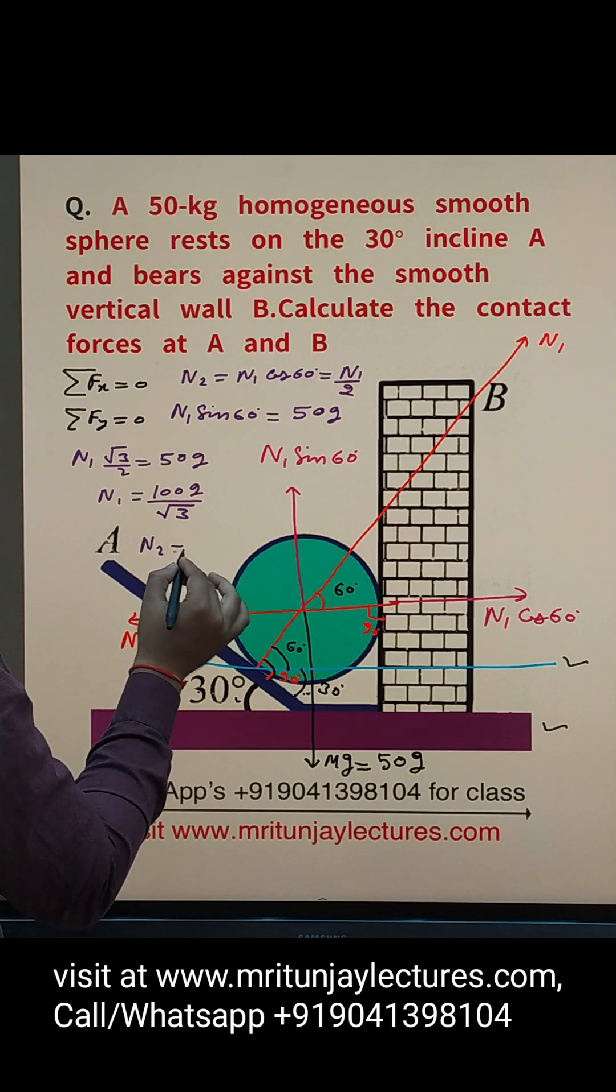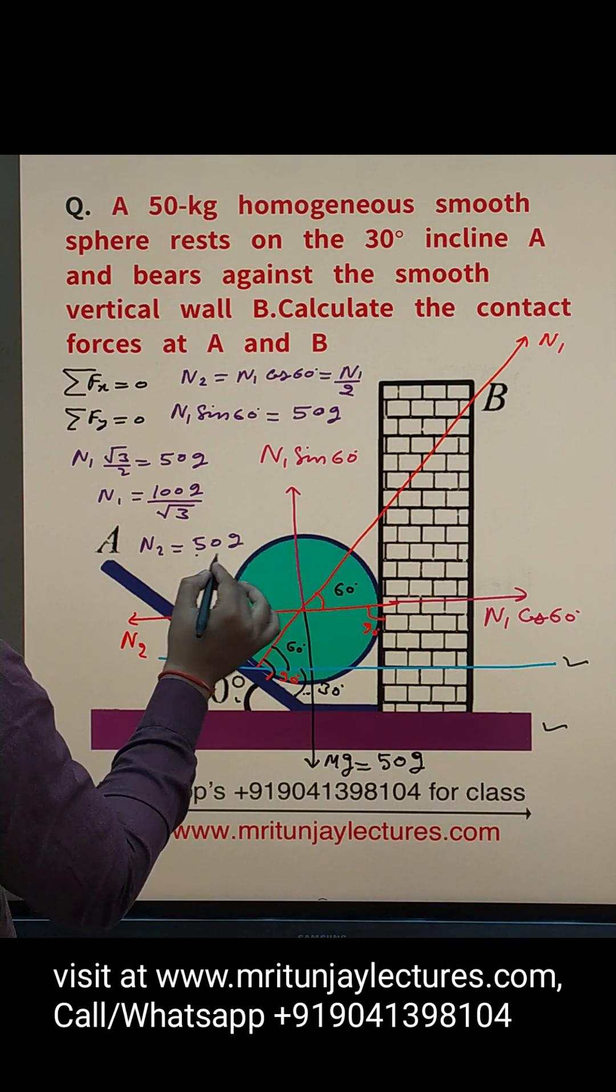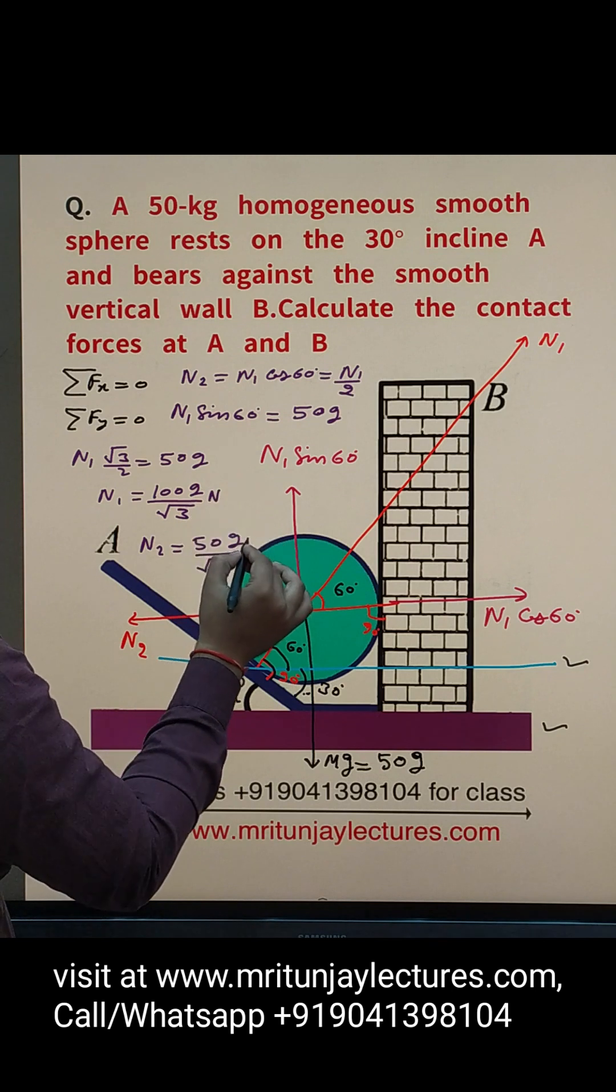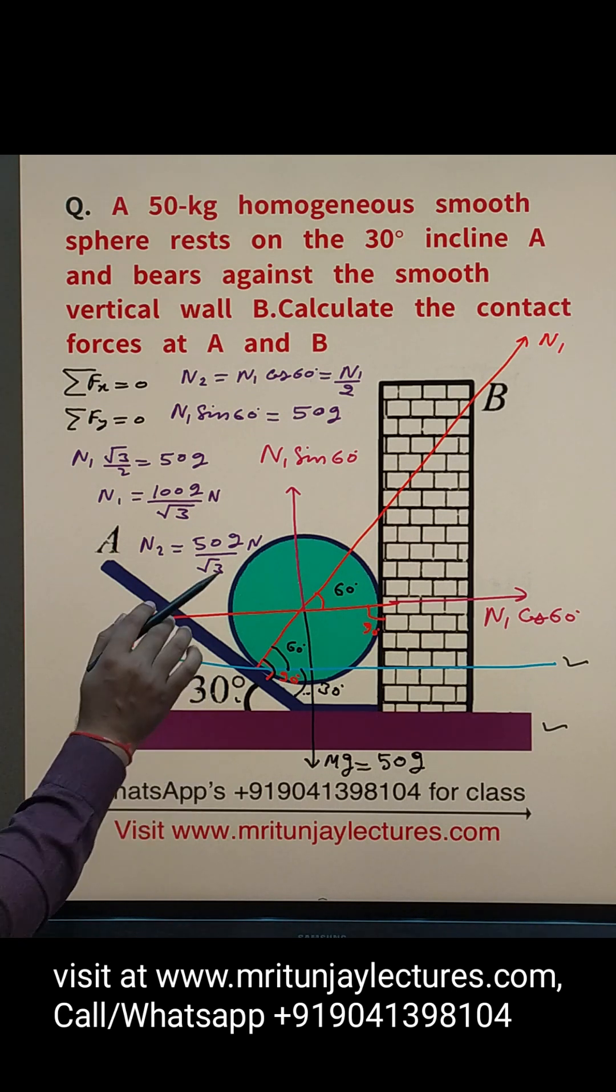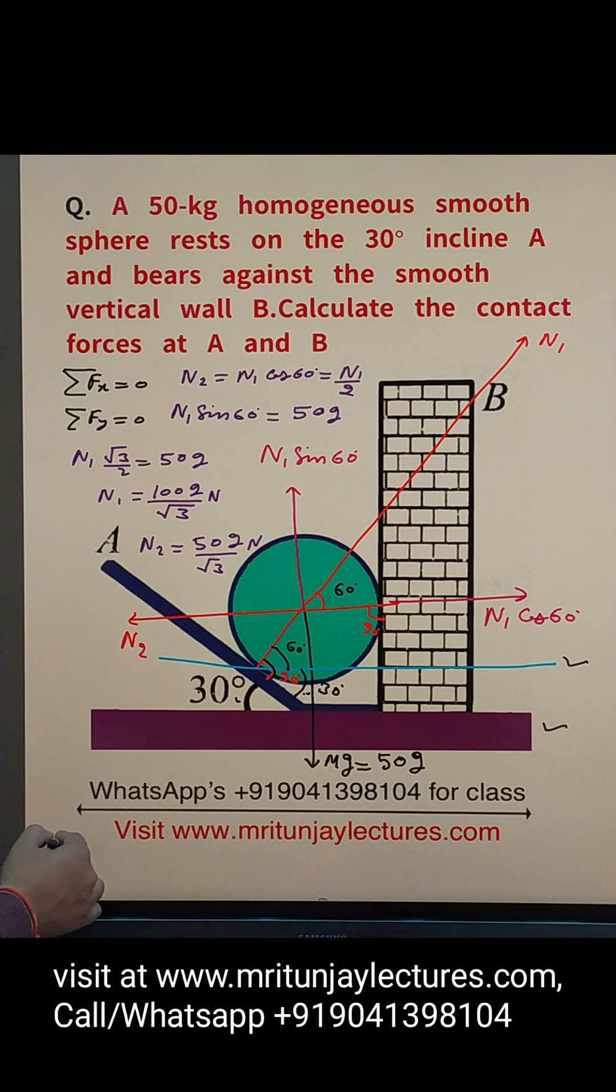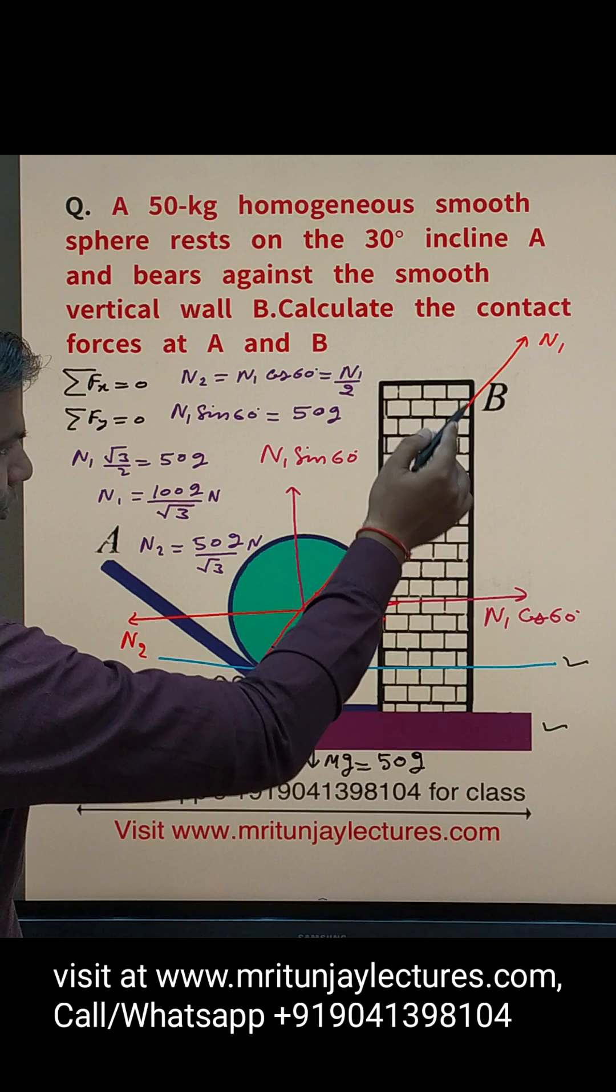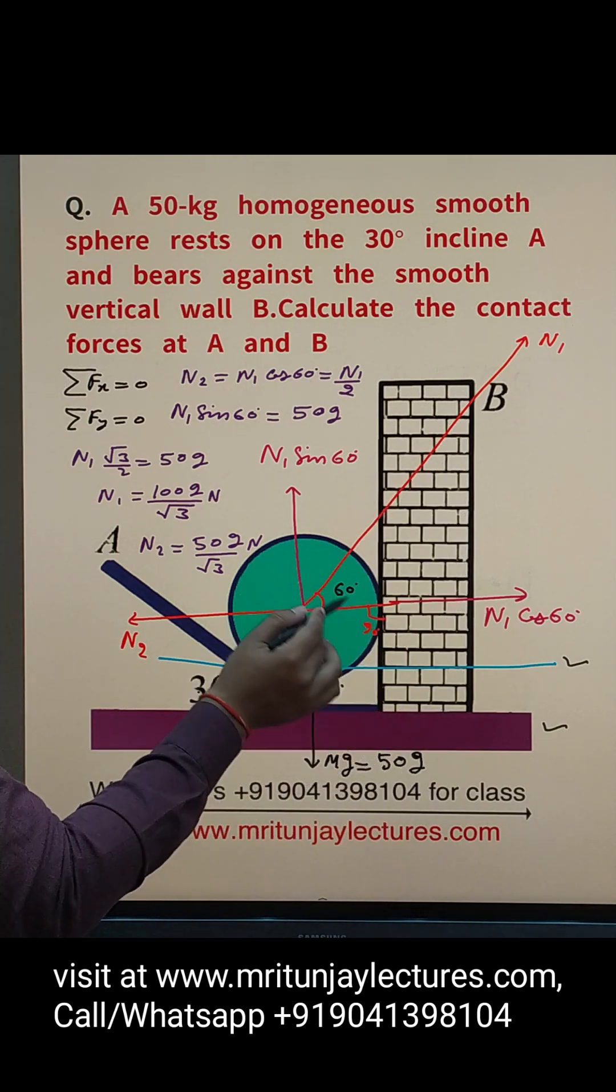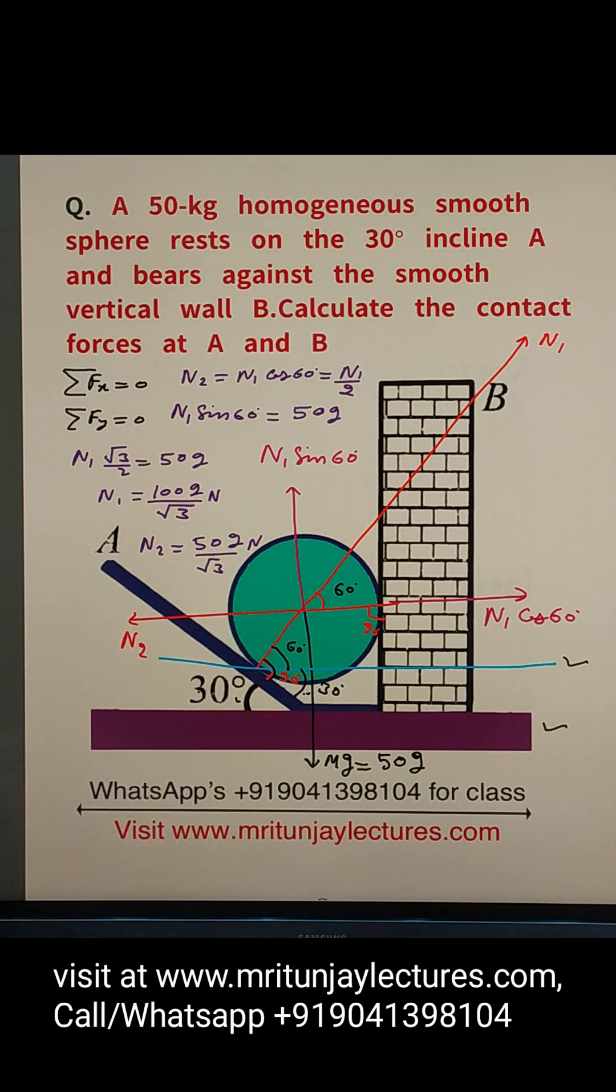That value put here, then we got N2. N2 is how much? 50g divided by root 3 Newton. So contact force by plane A on the sphere is 100g by root 3 Newton, and contact force applied by wall B on the sphere is N2, 50g divided by root 3 Newton.